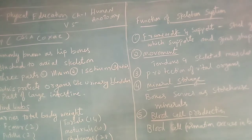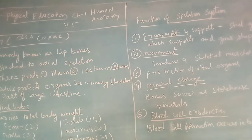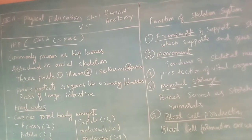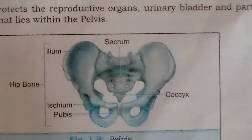The three hip bones are the ilium, ischium, and pubis. These bones help us protect the internal organs. The internal organs are very soft and need to be protected from environmental conditions. This pelvis protects organs such as the urinary bladder and parts of the large intestine.